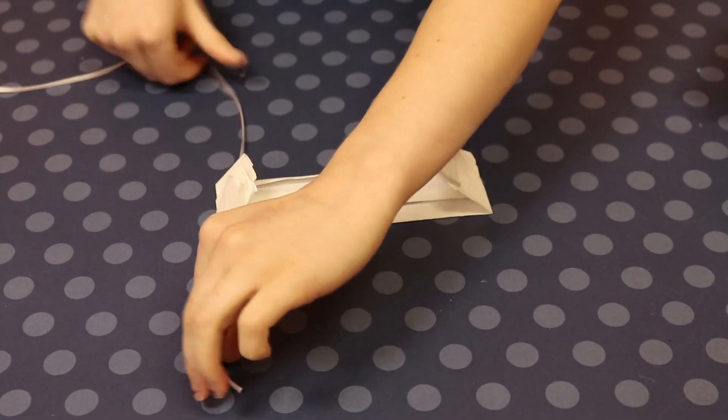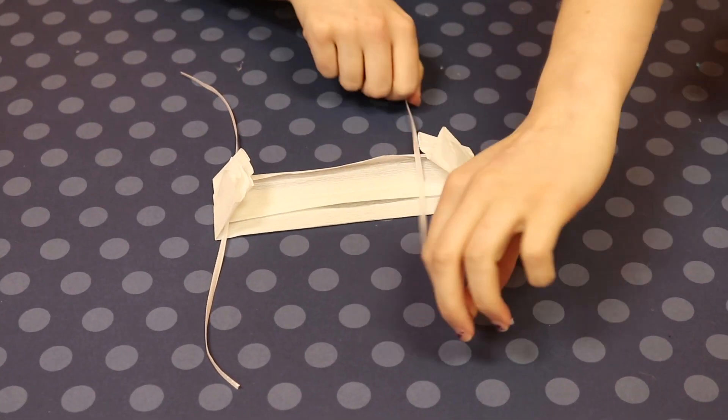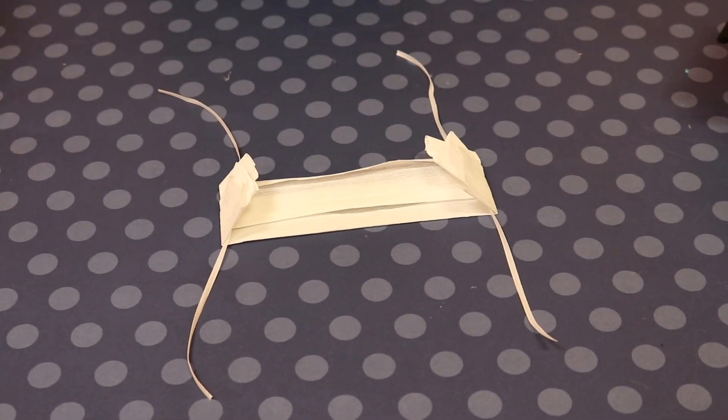Then, lay our two pieces of ribbon under our tabs and glue our tabs closed.